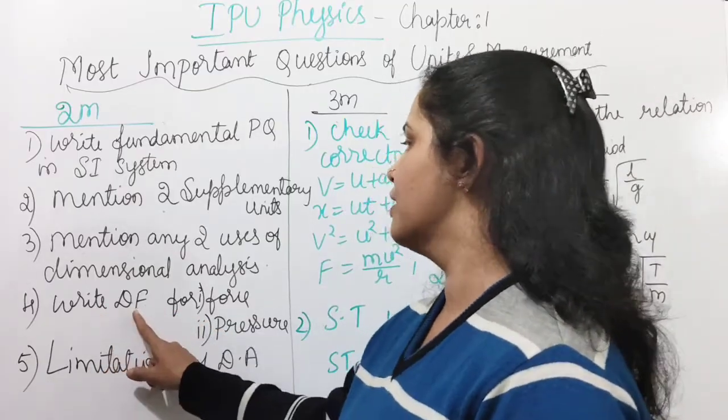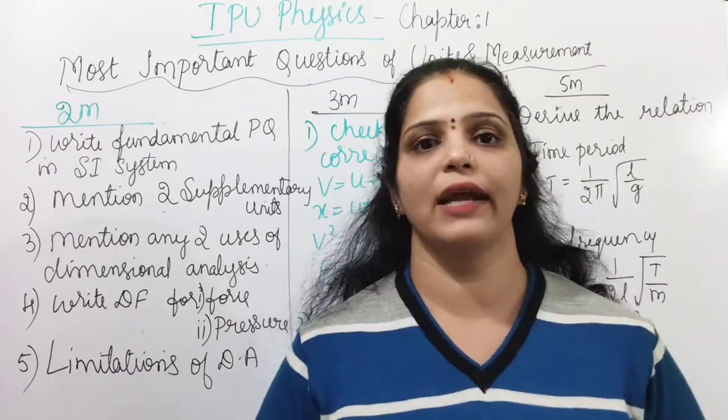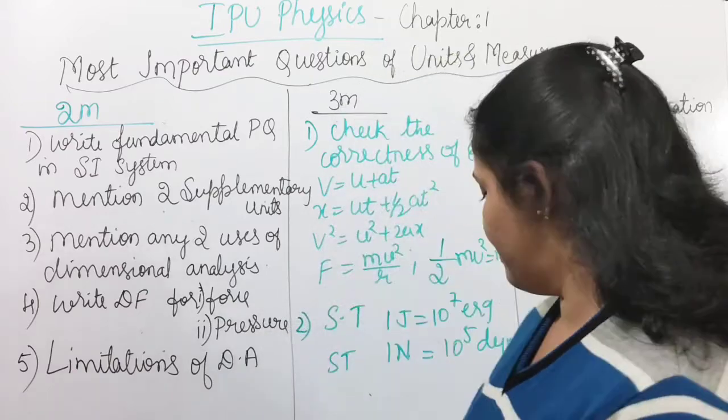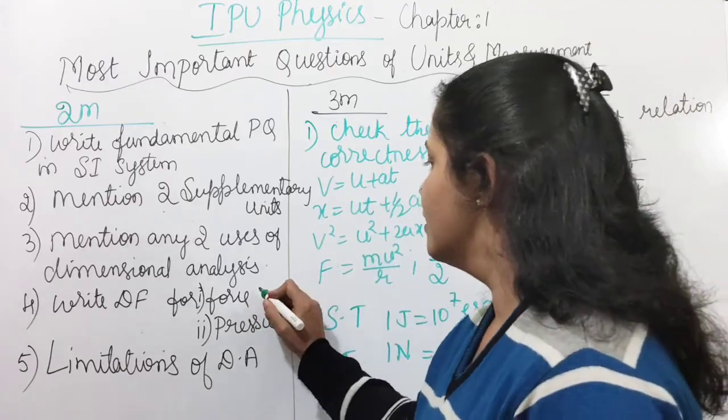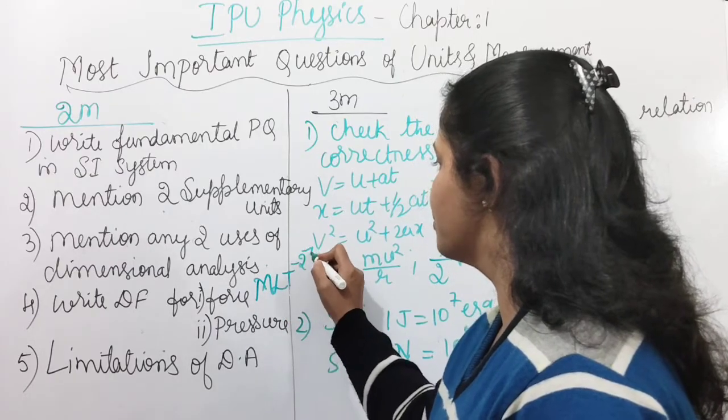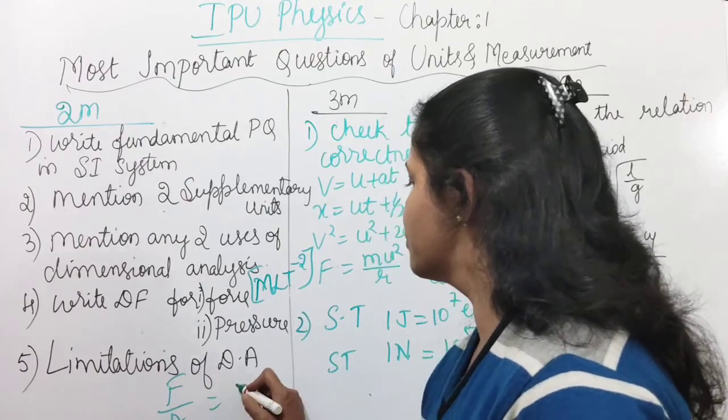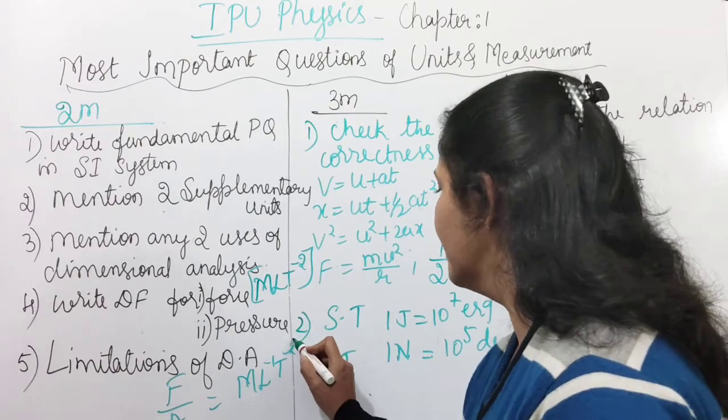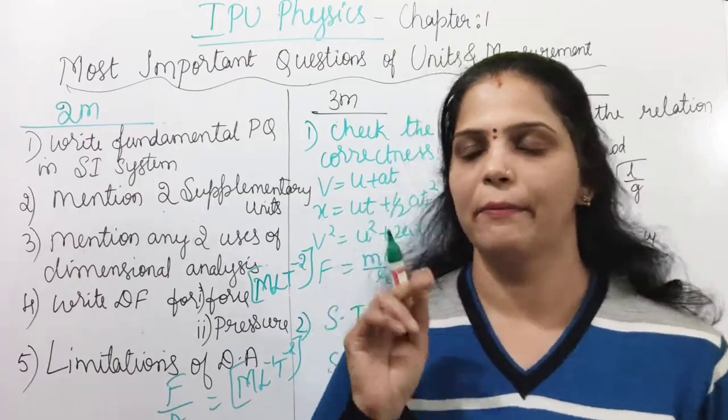And next one is write dimensional formula for force and pressure is very important but you can also expect the dimensional formula for other physical quantities. So what is the dimensional formula of force? It is very important, just remember this always, dimensional formula of force is M L T to the power minus 2. And pressure is force per area. So that is why it is divided by L squared, then it becomes M L to the power minus 1 T to the power minus 2.